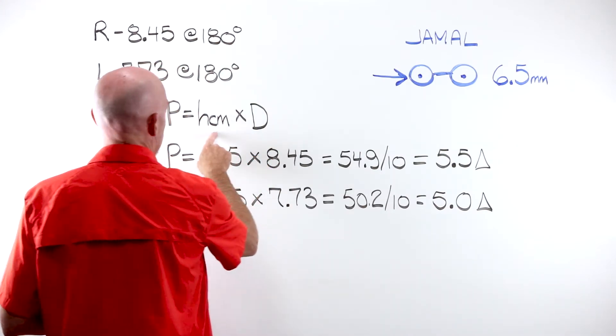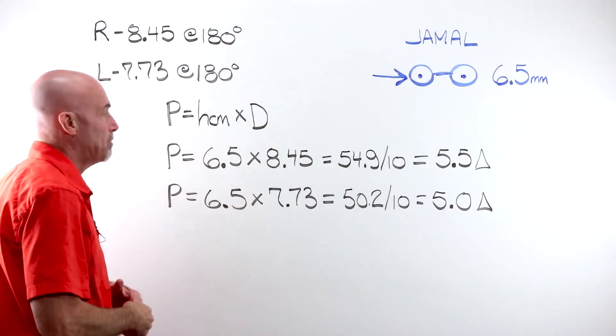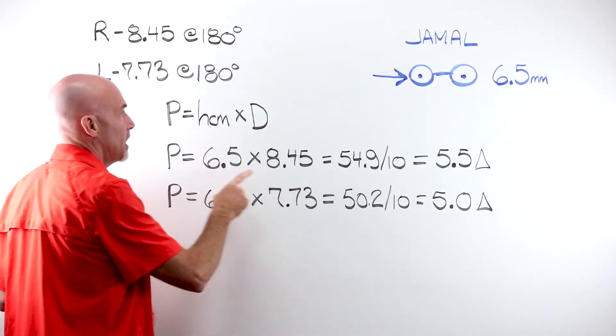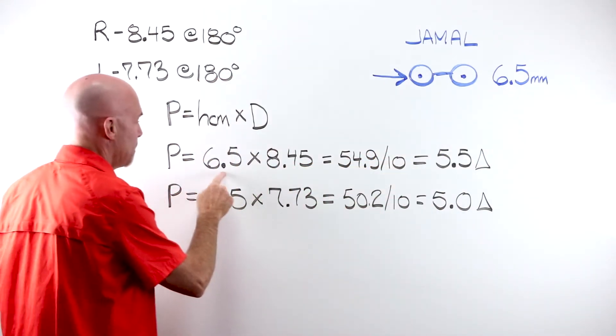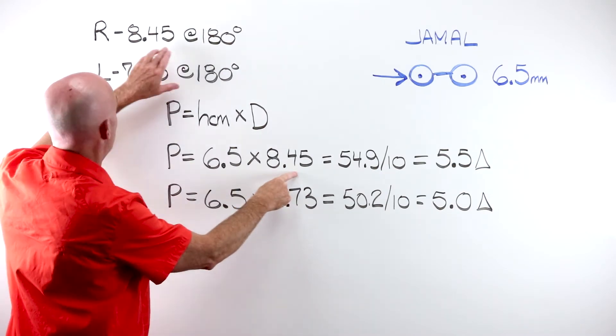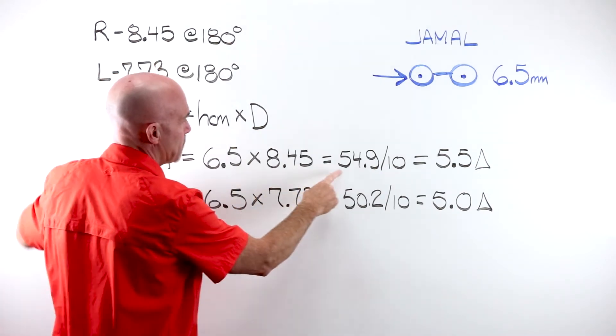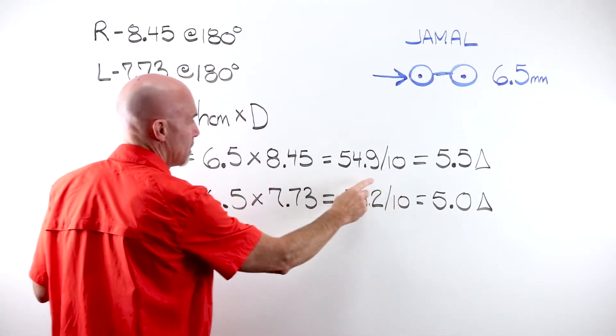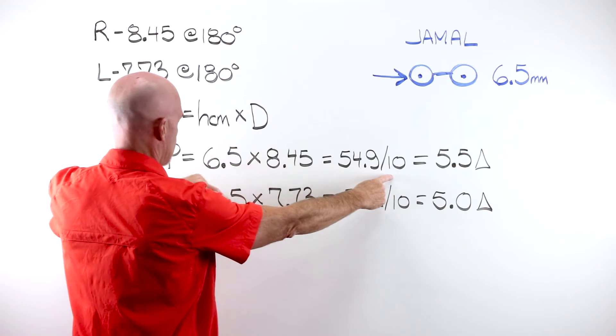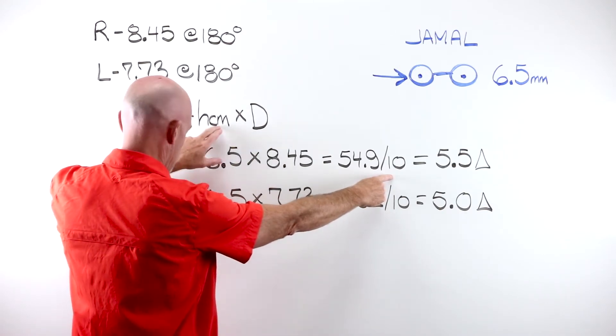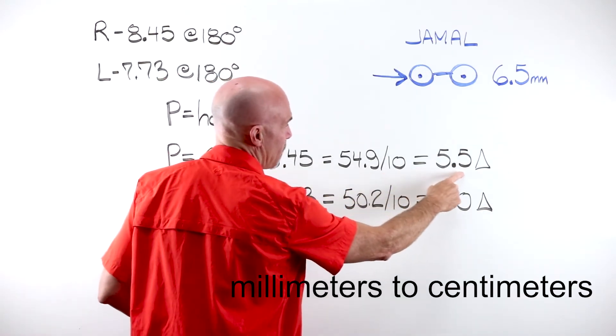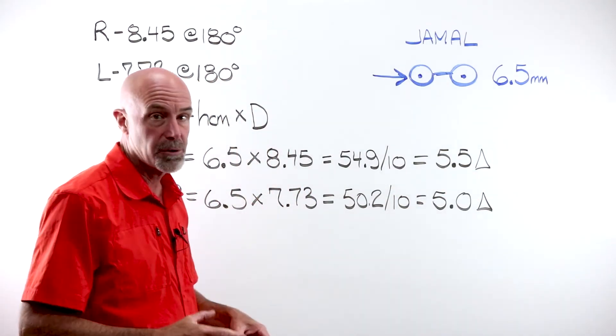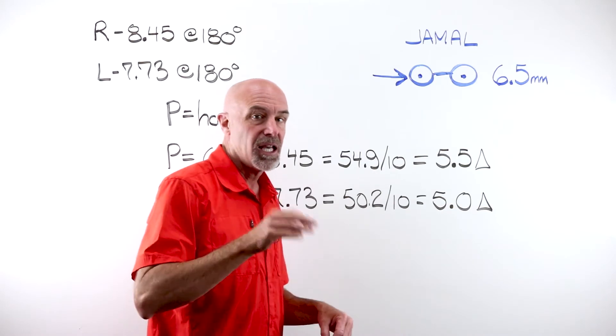If prism is equal to the amount the lens moved times the power in that meridian, we can run with this. HCM 6.5, that's the amount. Amount of power, 845, equals 54.9. We divide by 10 to convert these from centimeters to millimeters. And we end up with 5.5 or 5.5 diopters of error created in that lens.